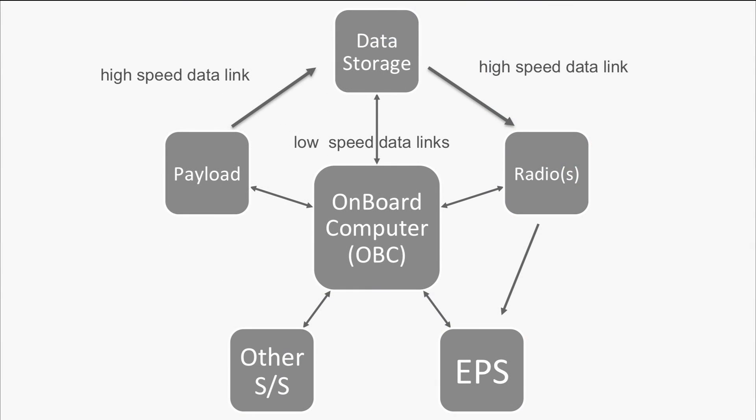Here you see an example of an architecture of a command and data handling subsystem of a spacecraft. At the center we have the onboard computer, abbreviated as OBC. The software of the OBC is in charge of onboard operations. It has a strong link with the electrical power subsystem, or EPS.